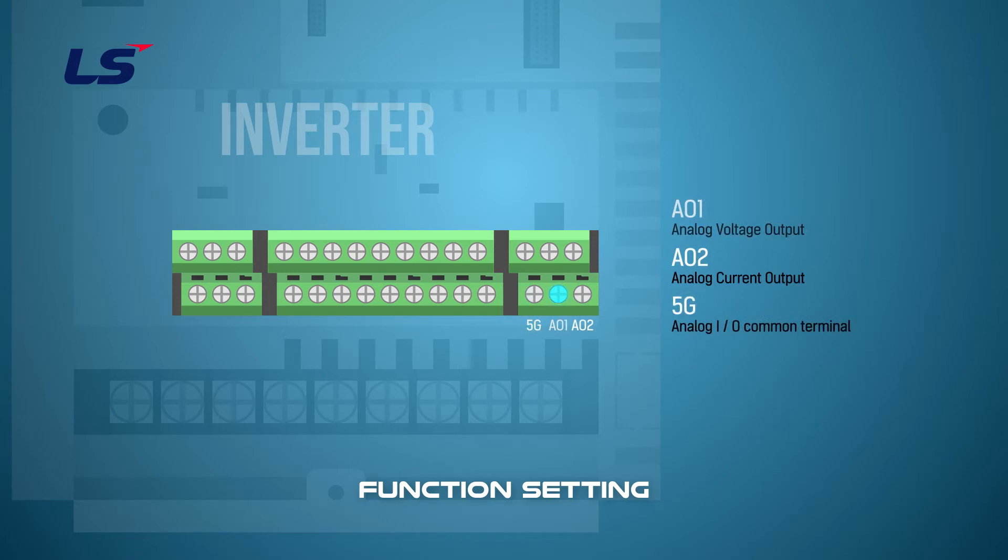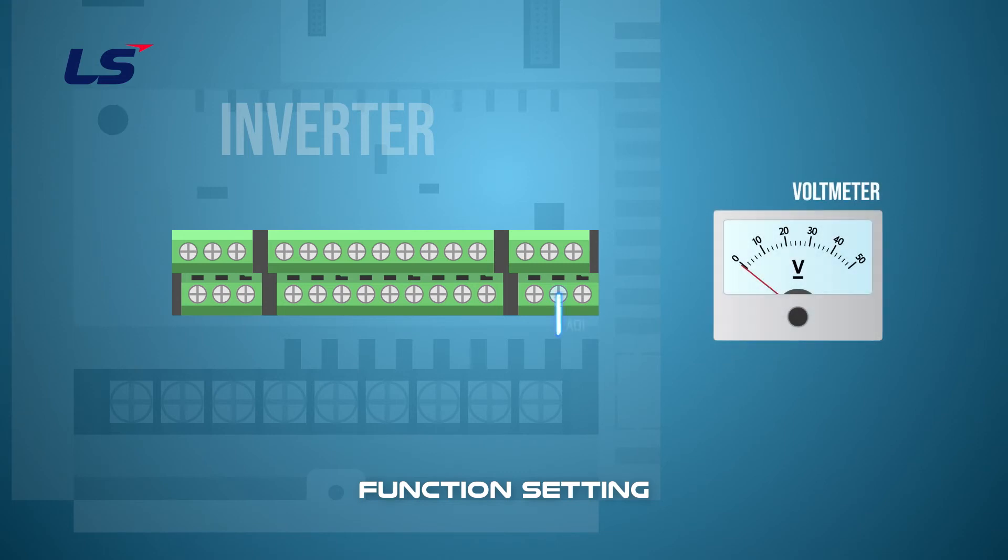AO1 is the analog voltage output terminal from 0 to 10 volts. AO2 is the analog current output terminal from 0 to 20 milliamps. And 5G is the analog input and output common terminal. To output voltage to the voltmeter, you can connect the two terminals AO1 and 5G.